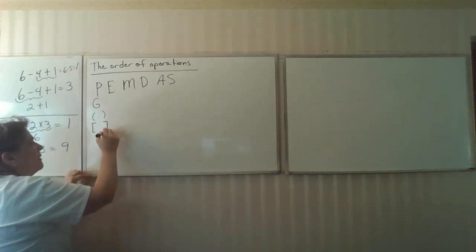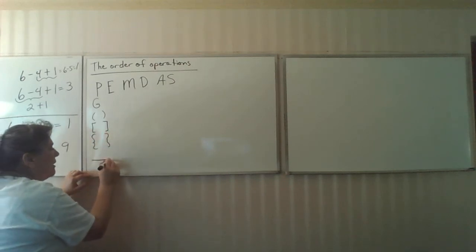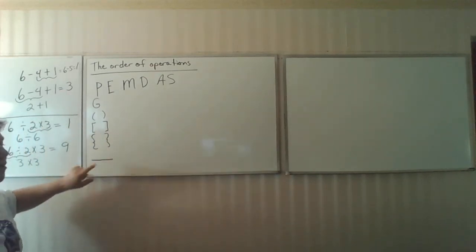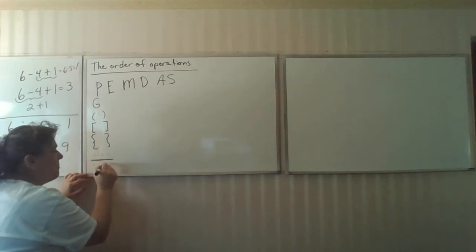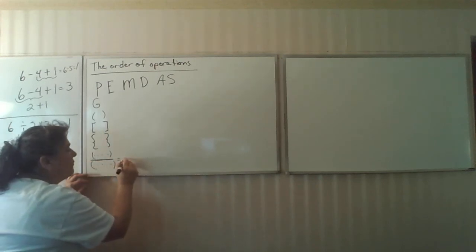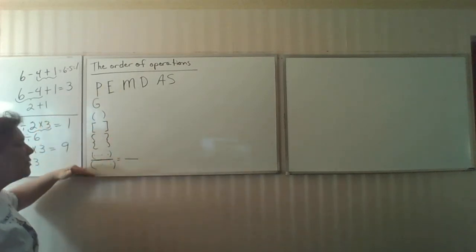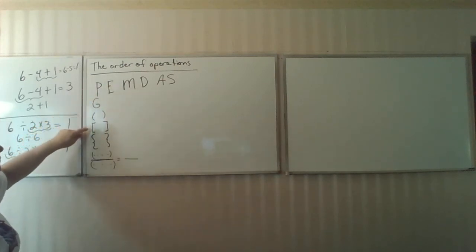Brackets, braces, and even that division bar, fraction bar. That is also a grouping symbol. This bar here with things on top and things on bottom says you do what's on top, you do what's on bottom, and then you finally do the division at the very end. So, this is important to understand that for the PEMDAS, the parentheses refers to a various number of grouping symbols.